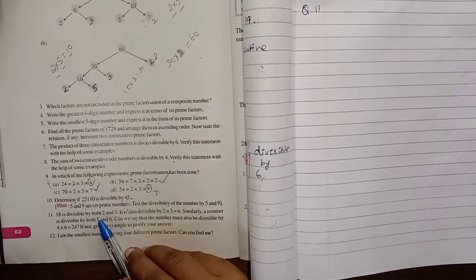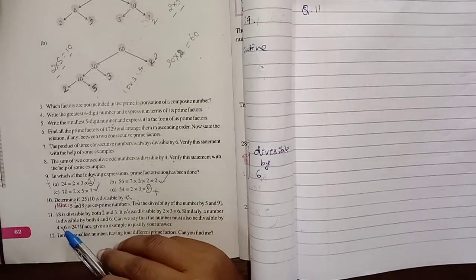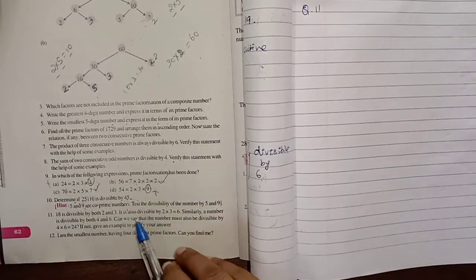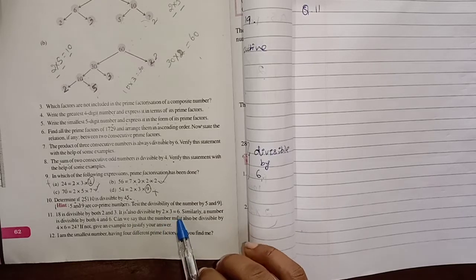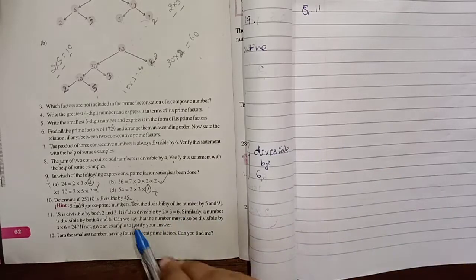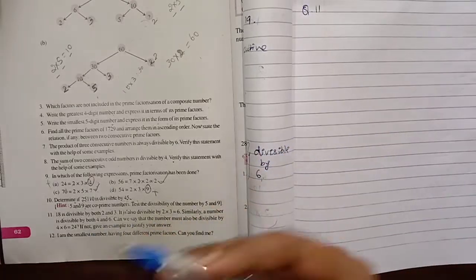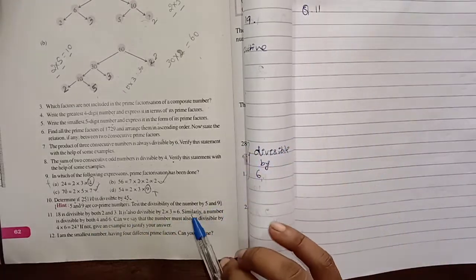18 is divisible by both 2 and 3. It is divisible by 2×3=6. Similarly,